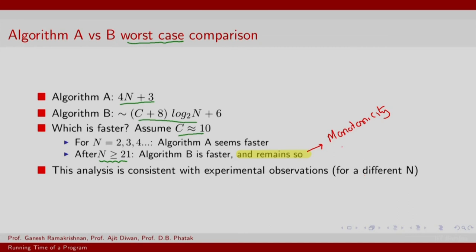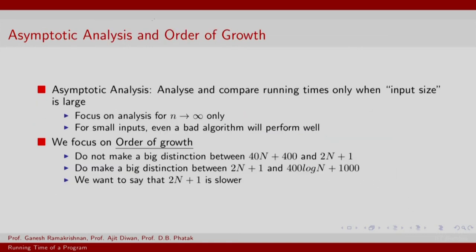Now, can we leverage this notion of monotonicity and define a notion of complexity? So yes, indeed we can. There is something called asymptotic analysis. Asymptotic analysis is really about exploiting or leveraging this monotonicity, which is about analyzing and comparing running times only when input size is large. That is, we focus on analysis for n, more specifically we use capital N when capital N is very large. For small inputs, even a bad algorithm such as linear scan will perform better, and we did find that for n up to 20 a bad algorithm like linear scan did perform better. But believe me, nobody in practice uses linear scan for searching, especially if the array is sorted.